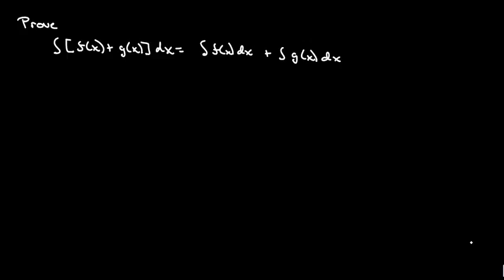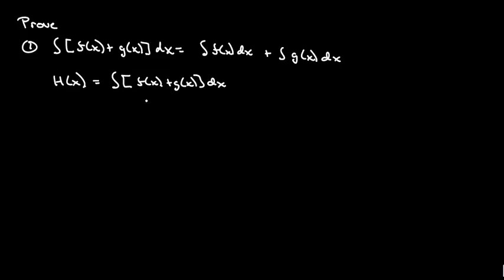I'm going to walk through and prove some of these anti-differentiation rules. Here's rule number one. Let's say we've got some function h as a function of x, and that is equal to the integral of f of x plus g of x dx. This means that the derivative of h of x is equal to f of x plus g of x.